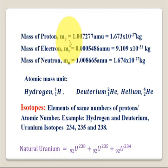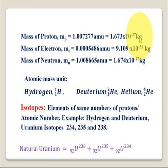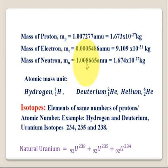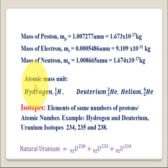The mass of a proton, mp, equals 1.007277 atomic mass units, which is equal to 1.673 × 10⁻²⁷ kg. The mass of an electron, me, equals 0.0005486 amu, which is equal to 9.109 × 10⁻³¹ kg. The mass of a neutron, mn, equals 1.008665 atomic mass units, which is equal to 1.674 × 10⁻²⁷ kg. AMU stands for atomic mass unit.